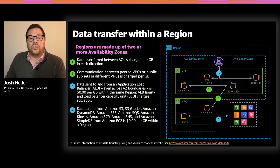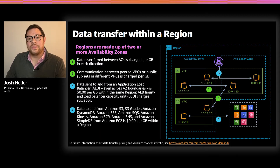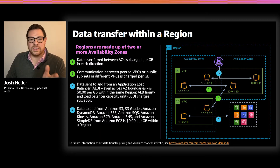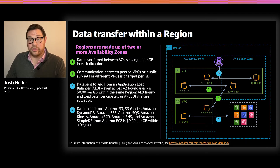You'll also notice a group of AWS services that exist as regional endpoints on the lower right of the slide. For services like Amazon S3, DynamoDB, and others listed on the slide, there's no charge for data transferred between those services and EC2 instances in the same region.